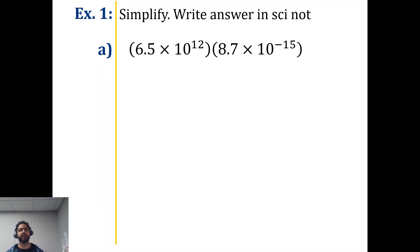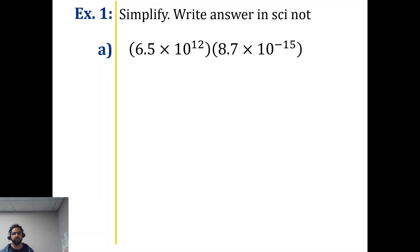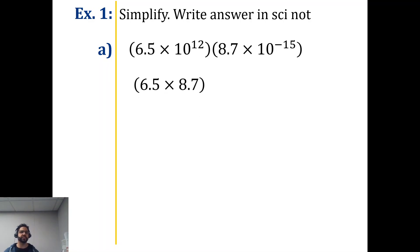Now, if you have a calculator available, this will definitely make it a lot easier. If we choose not to let you use a calculator on the assessment, it'll be because the numbers are a lot easier to work with, maybe like 4 times 5.2, something like that. But for now, I'm just going to go ahead and multiply 6.5 by 8.7. You do the same thing on your calculator and you would notice that you get a 50-something. So that's what we're going to write down first — a 56.55.